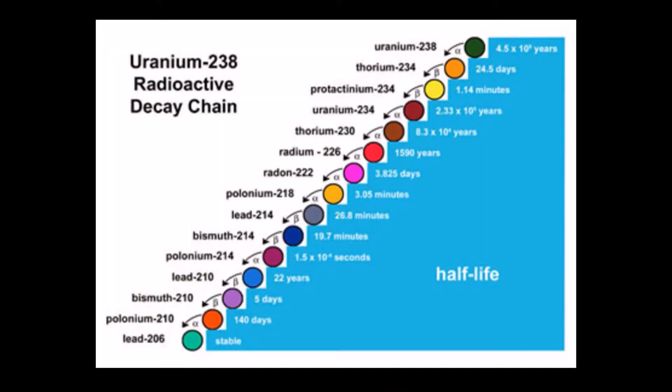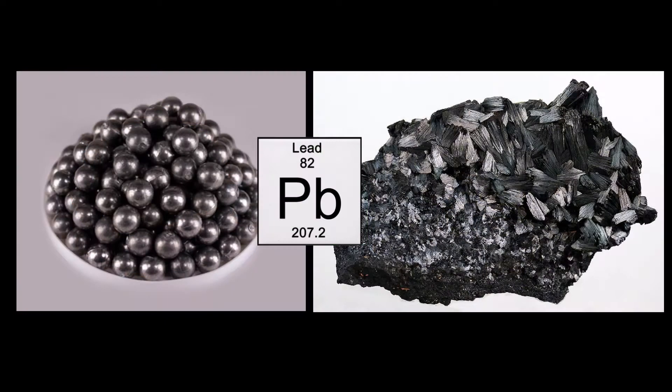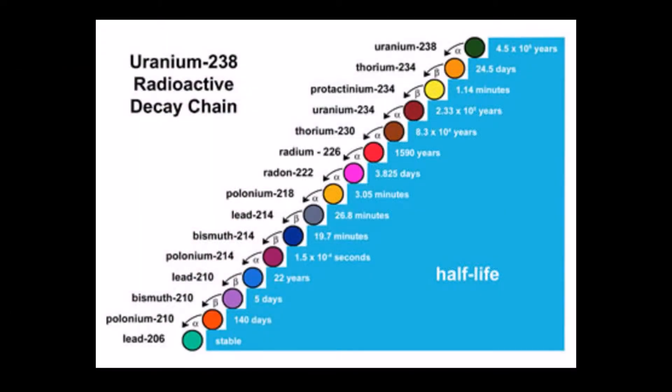In uranium lead dating, each radioactive isotope will continue to experience radioactive decay into other isotopes until it is stable, meaning it is no longer radioactive. For uranium-238 to become lead-206, it will undergo 14 radioactive decays. Once it becomes lead-206, it is stable and no longer radioactive.